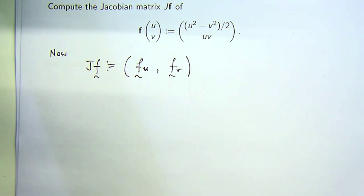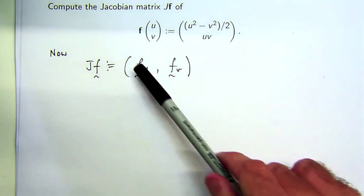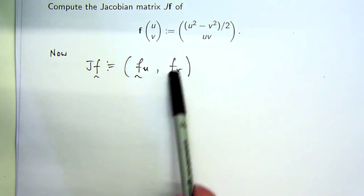The subscripts mean partial derivative with respect to the subscript. So f sub u means the partial derivative of f with respect to u. But this will be a vector.